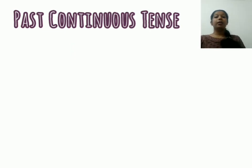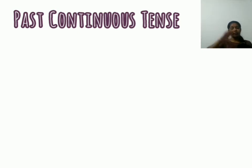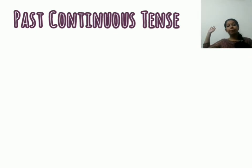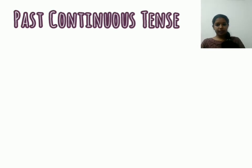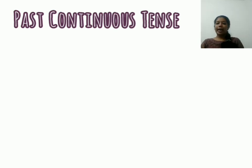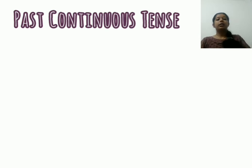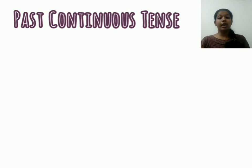Dear students, next we have our past continuous tense. Past continuous tense refers to events that were happening at one point of time. When you hear the word 'continuous,' you need to think about the ING form of the verb. In continuous tense, we also need the forms of 'be.' In present continuous we use 'is,' 'am,' 'are' — the present forms. Here, in past continuous, we need the past forms of 'be,' which are 'was' and 'were.'